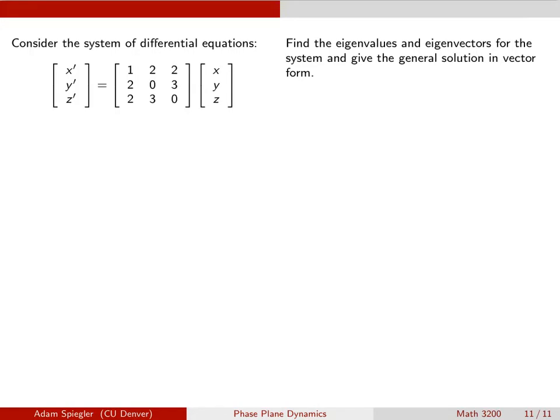Step 1 is find the characteristic equation. If we've got a larger matrix, we don't change the way we find the characteristic equation. We still take the determinant of the matrix that we get when we subtract this undetermined lambda from the diagonal entry. So we would get 1 minus lambda, 2, 2, 2, 0 minus lambda, 3, 2, 3, and 0 minus lambda, and we set that equal to 0.